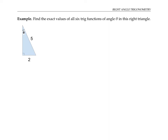Let's use these definitions to find the exact values of all six trig functions for the angle theta in this triangle. Starting with sine of theta — that's opposite over hypotenuse. For this angle theta, the opposite side has measure 2 and the hypotenuse has measure 5, so sine theta is 2 over 5. For cosine theta, adjacent over hypotenuse, I don't know the adjacent side length, but I can find it using the Pythagorean theorem.